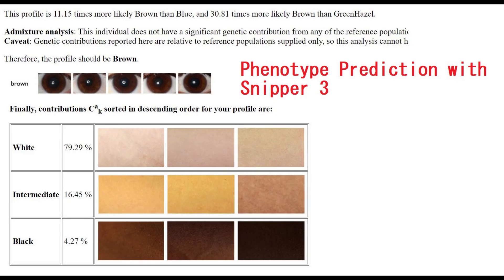This is his prediction with Snipper Free. Snipper Free predicted him to have brown eyes and white skin. There was also a prediction for hair color, but I'm not going to post it here because there were only about four SNPs found, so it's not a reliable prediction. When it comes to eye color and skin color, according to Snipper Free, this individual likely had brown eyes and white skin.